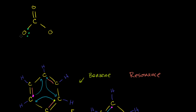If I draw this oxygen over here, it has seven valence electrons — it has one extra electron, so it has a negative charge. The same is true for this other singly-bonded oxygen — seven valence electrons, one extra, so it also has a negative charge. If you were to just look at this contributing structure, you'd say this doubly-bonded oxygen is neutral, with six valence electrons.